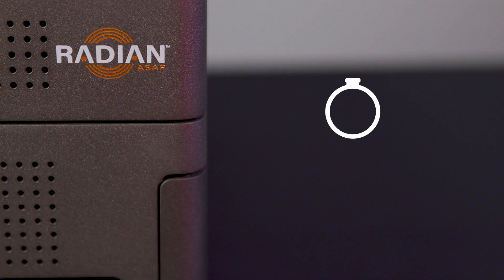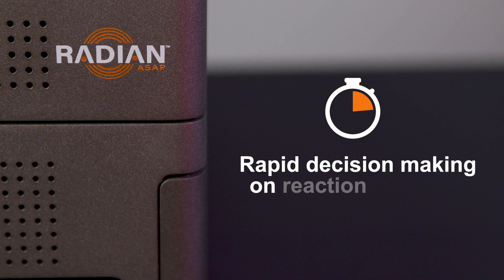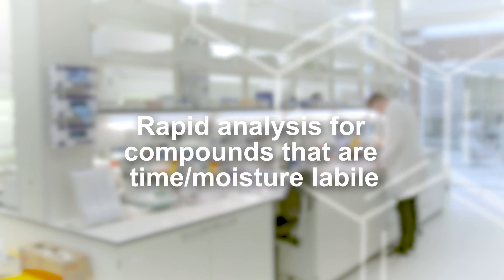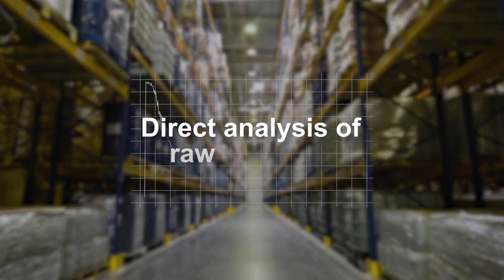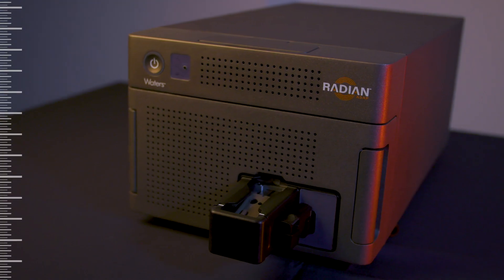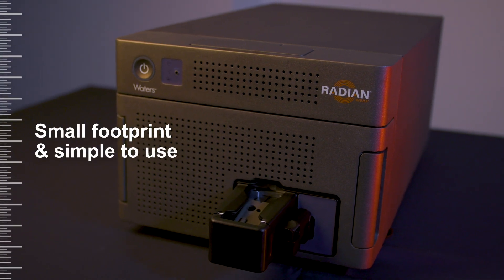The advantages of the radian ASAP: rapid decision making on reaction progress, rapid analysis for compounds that are time or moisture labile, direct analysis of raw materials, analysis of purification fractions. The radian ASAP also has a small footprint and is simple to use.